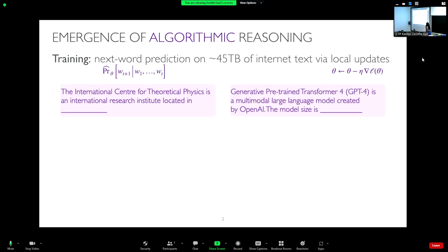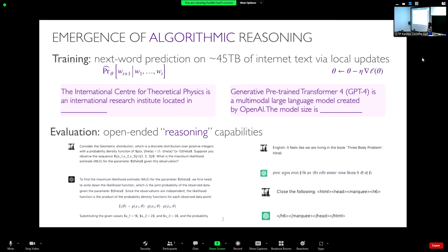We've seen a lot of emergent behavior observed for large language models. These models are trained basically on next word prediction tasks — you get a sentence and want to predict what this word is. The models try to find the probability distribution of the next word given the context. This is trained on a huge corpus of data — 45 TB of internet text for GPT-3. Even though the task seems very simple, when you evaluate these models, they actually end up doing much more than what this task would suggest.